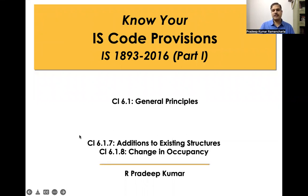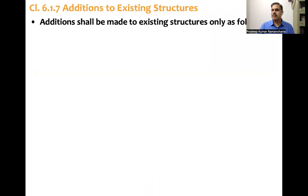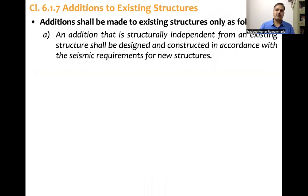Additions to existing structures — that is clause number 6.1.7 — and clause number 6.1.8 change in occupancy. Additions shall be made to existing structures only as follows. The first condition is an addition that is structurally independent from an existing structure shall be designed and constructed in accordance with the seismic requirements for new structures.